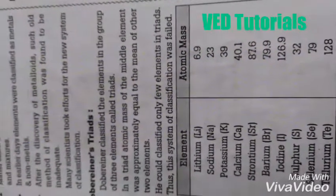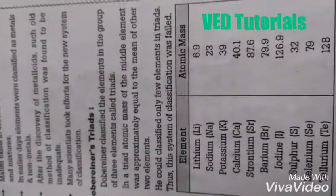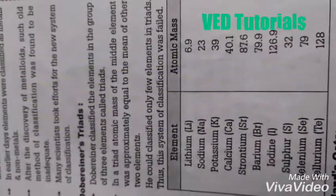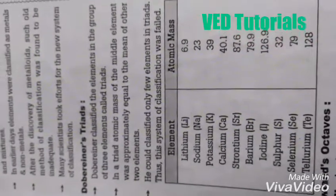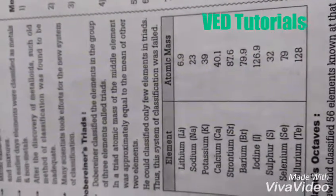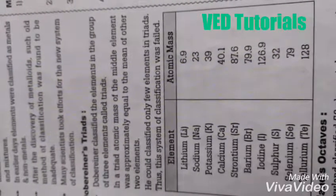So what are triads? Dobereiner classified the elements in groups of three elements called triads. In this triads, the atomic mass of the middle element was approximately equal to the mean of the other two elements.